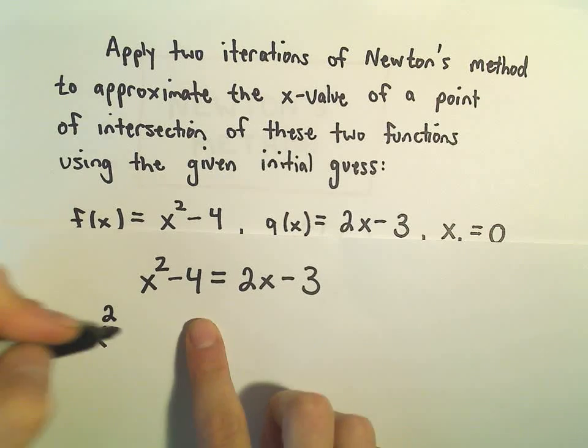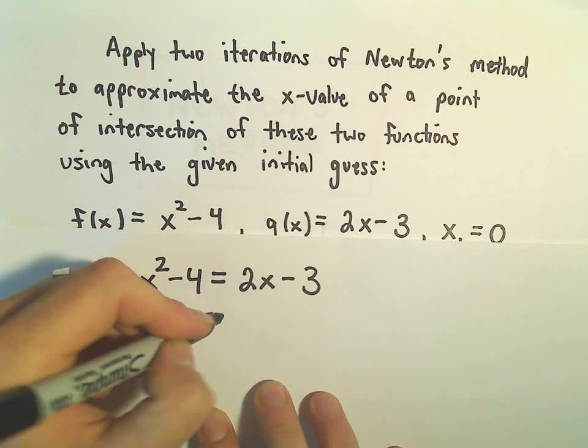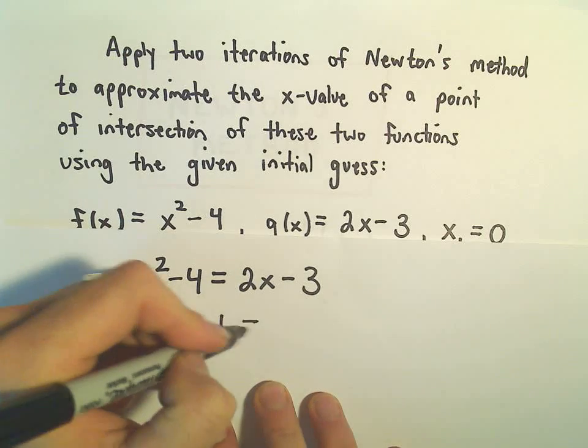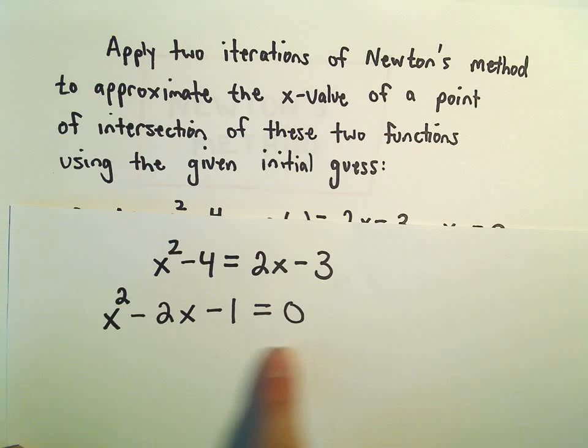So we have x squared. We can subtract the 2x over. We can add 3 to both sides, which would give us negative 1. And we're going to set that equal to 0. So this is what Newton's method tries to solve. Equations set equal to 0.